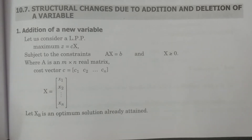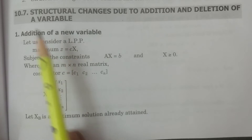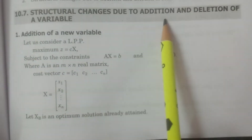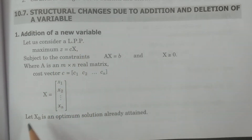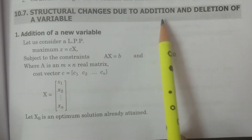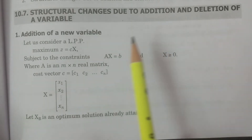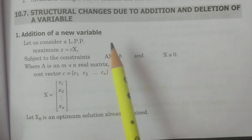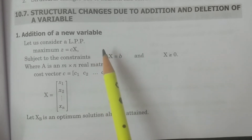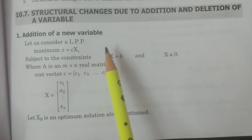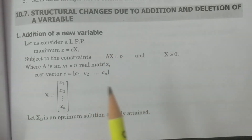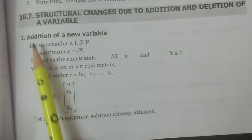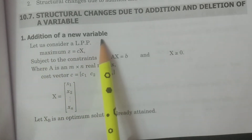Welcome to BSc Statistics students. In this class, I explain structural changes due to addition and deletion of a variable in the post-optimal analysis. That is, if you add a new variable or if you delete one particular variable in the problem, then what would be the structural changes, what would be the changes in the new linear programming problem, and how to solve the LPP. So this is our main objective. First of all, we discuss addition of a new variable in the post-optimal analysis.